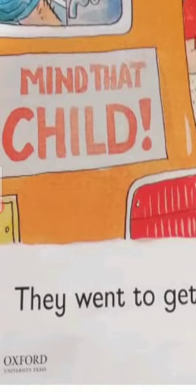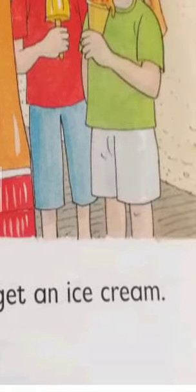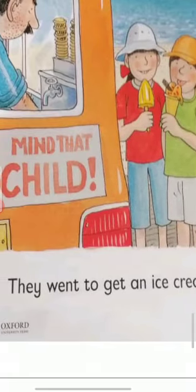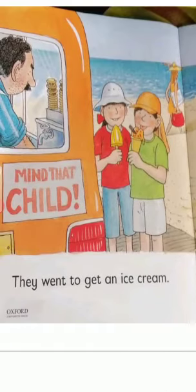Very good. The first word is 'they'. Then: w-e-n-t — went. T-o — to. G-e-t — get. A-n — an. Ice cream. Read it again: they went to get an ice cream. One more time: they went to get an ice cream. Read it in a loud voice: they went to get an ice cream.